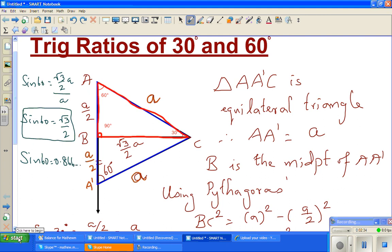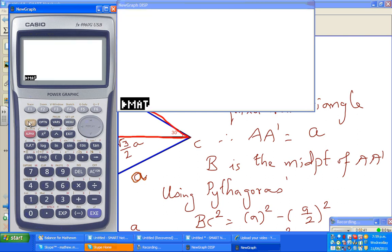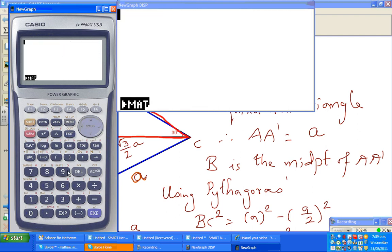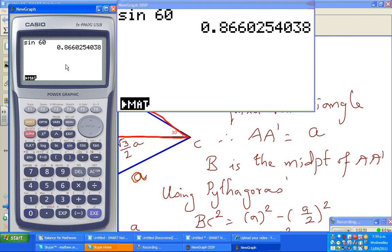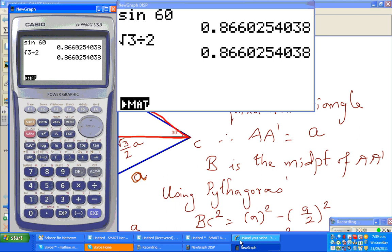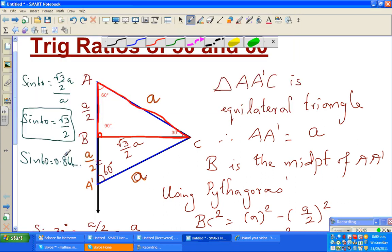I will show you on a calculator. My calculator always goes on radians so I have to set it to degrees first. Sin 60° is 0.866, and if you go √3/2, that will give you the same answer. So we have done sin 30° and sin 60°.